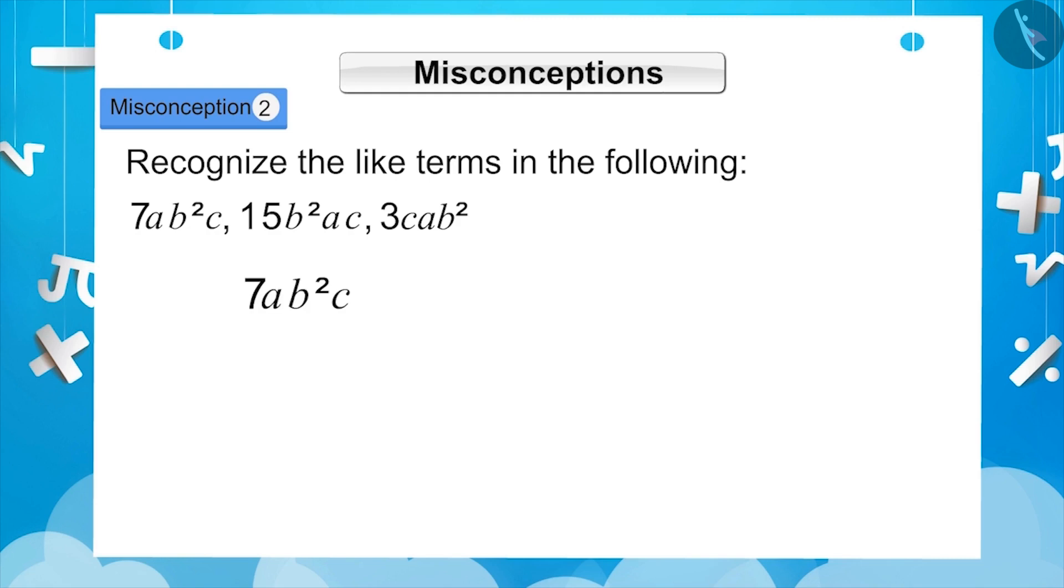In the given terms, the factors of 7ab to the power 2c are 7, a, b, b, c. The factors of 15b to the power 2ac are 15, b, b, a, c. And the factors of 3cab to the power 2 are 3, c, a, b, b.